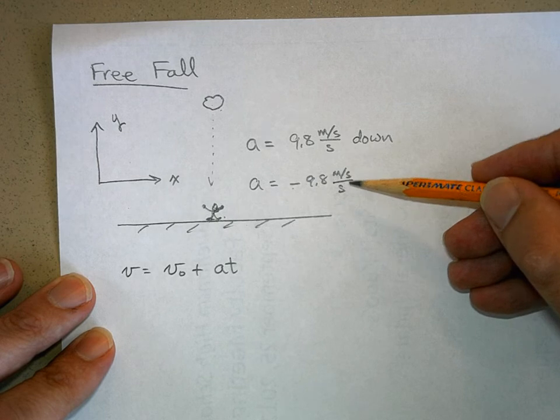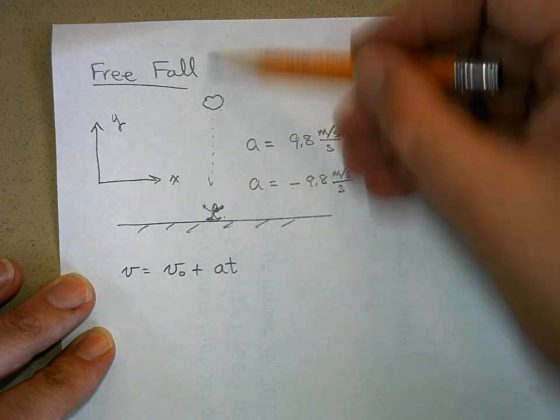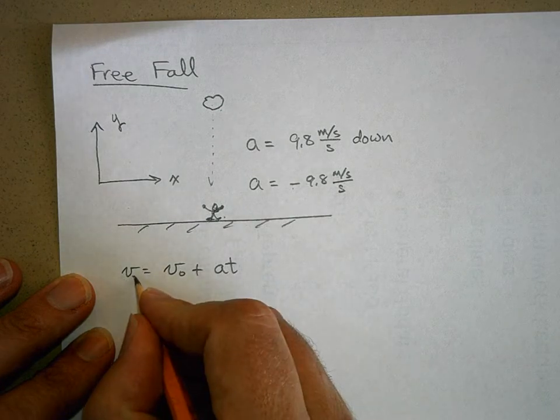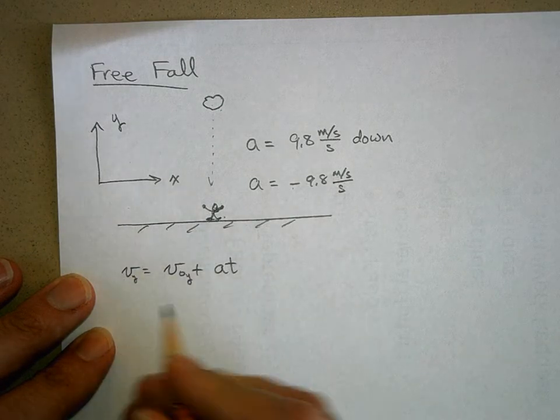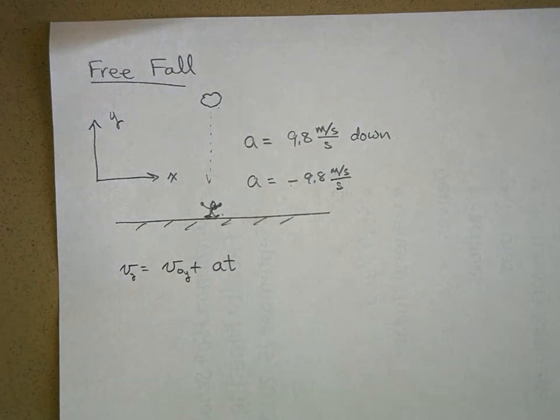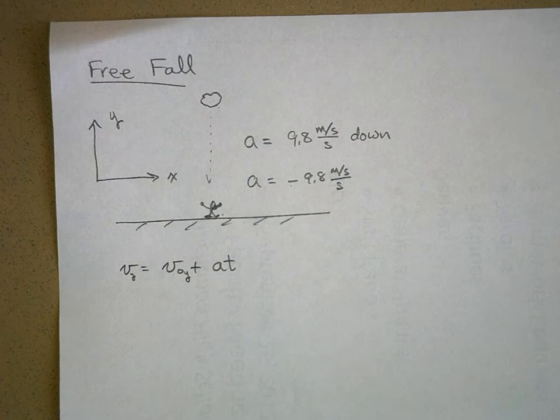or 9.8 meters per second squared in the Y direction. Now here's what we're going to assume for right now. All our velocities are in the Y direction for this section. So I'm going to put a little subscript Y there, and that just means my initial velocity is in the Y direction, my final velocity is in the Y direction, my acceleration is in the Y direction.